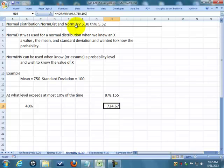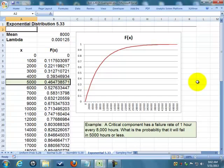That's NORMDIST and NORMINV. Now, let's talk about example 5.33. Nothing says we have to have a normal distribution. We've talked about Poisson distributions, binomial distributions. We could have an example where we have an exponential distribution. Here critical components fail at a rate of 1 every hour. What is the probability that it will fail in the first 5,000 hours?